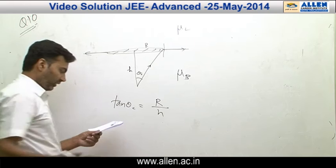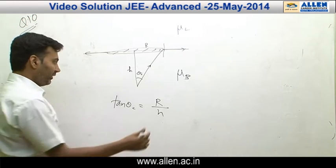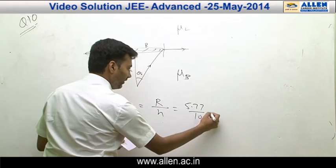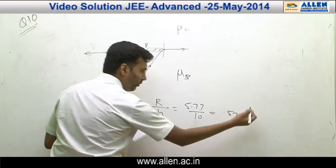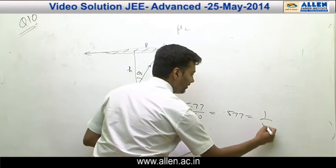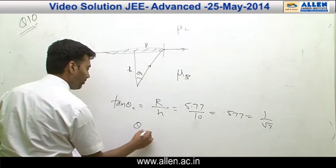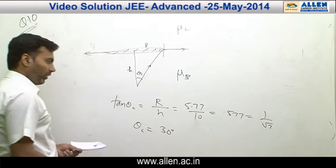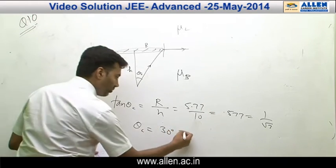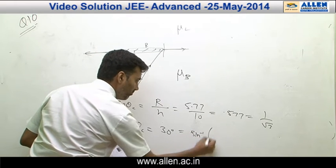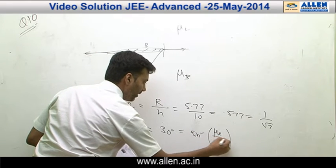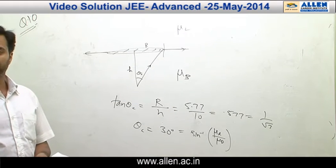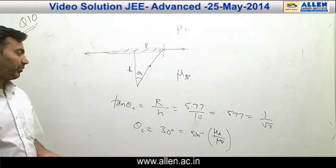r by h. The data is so very well given: r is like 5.77, h is 10, this is 0.577 which is like 1 by root 3, so theta c comes out to be 30 degrees. So tan theta is 1 by root 3. Theta c is also equal to sine inverse mu rare by mu dense. As I said, mu dense would be the block, that would be for the block, and mu rare would be for